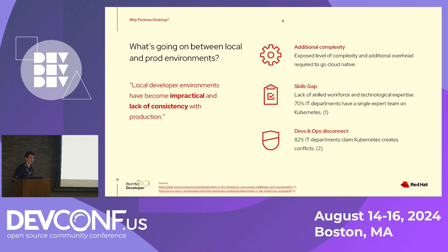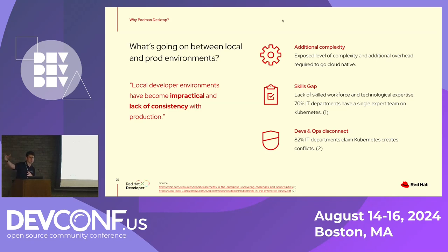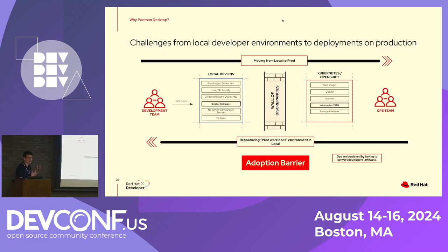There are a lot of differences in how we run applications from my local machine to Kubernetes — the way we work with registries, non-root containers, Docker Compose files that work really well on my machine but when I try to translate them to a Kubernetes environment, things are a little bit different. There's also a lack of consistency in local machine resources versus a production cluster. That, in addition to a skills gap, makes there be an adoption barrier in trying to move cloud-native.